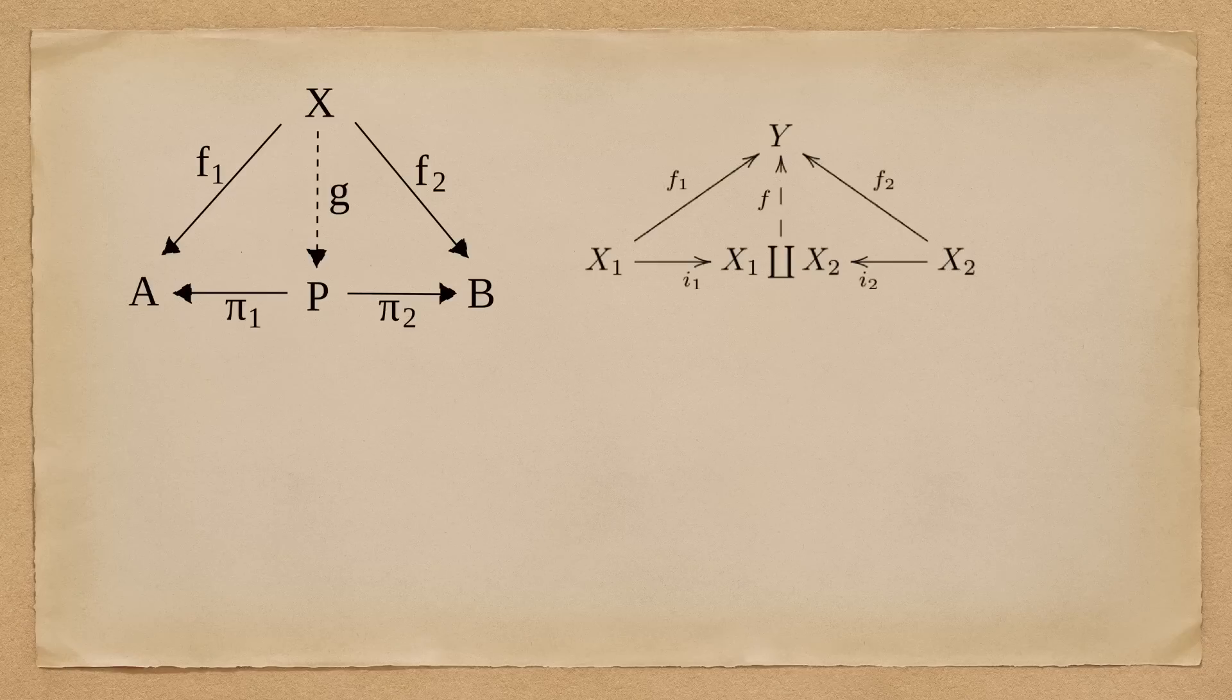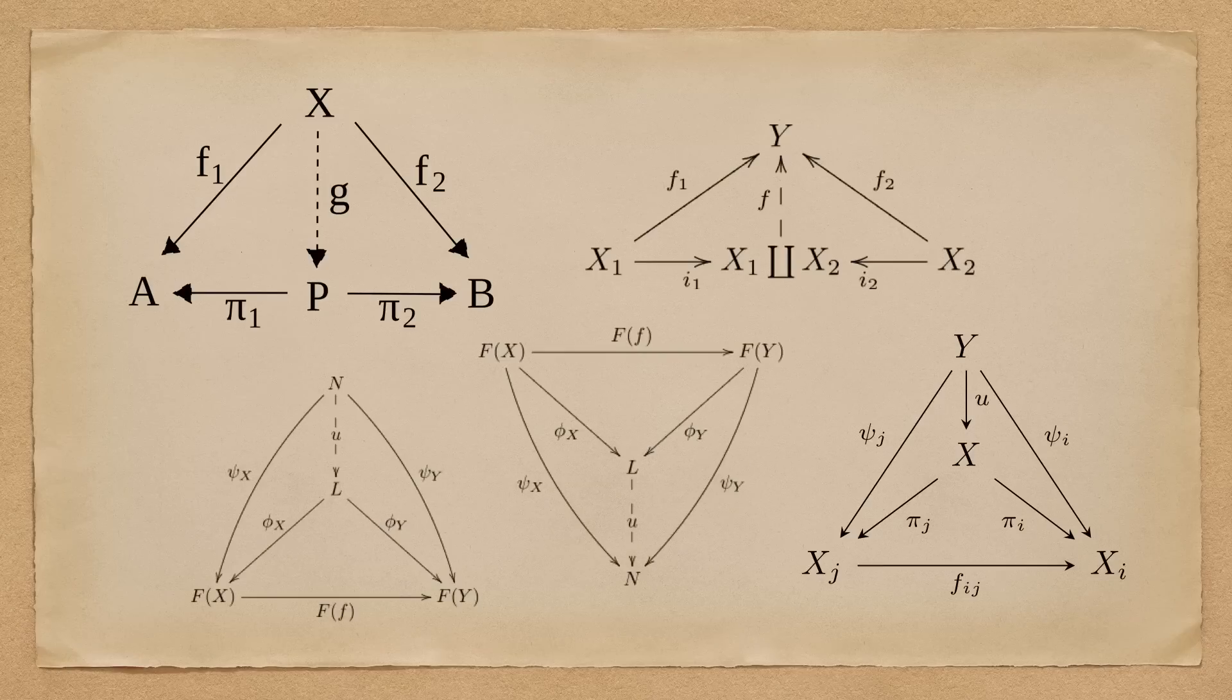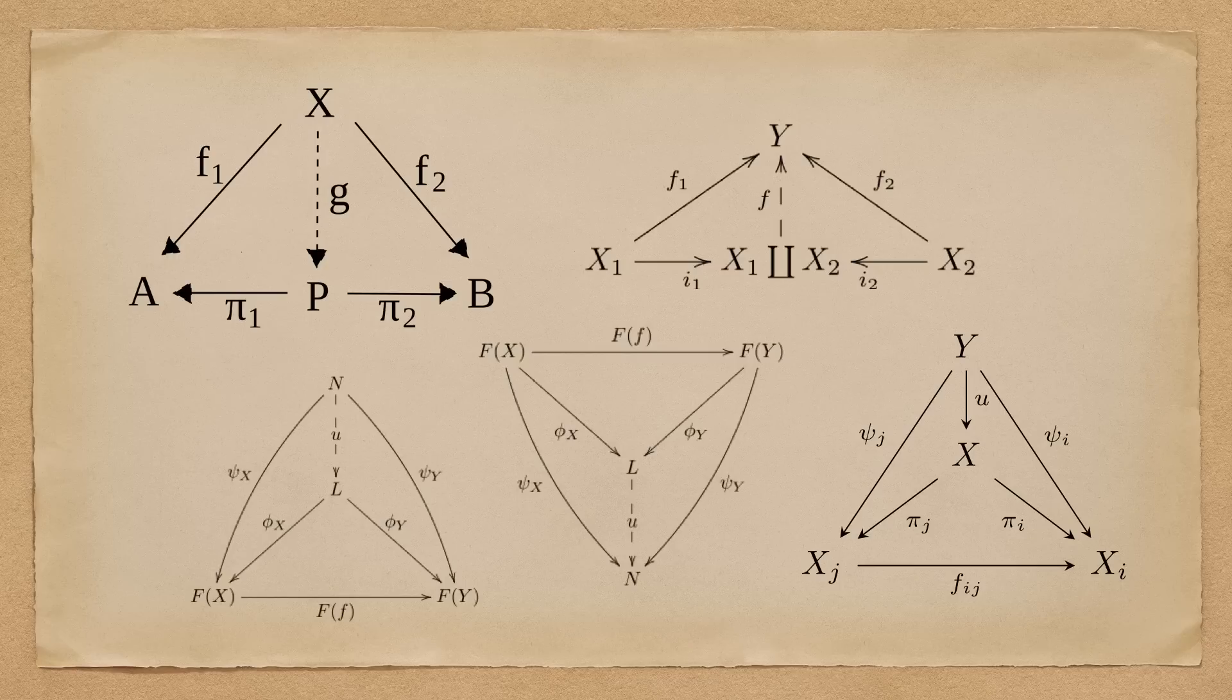We have product, co-product, limit, co-limit, inverse limit, etc. You name it. But if there's a commutative diagram, there's probably a universal property somewhere.